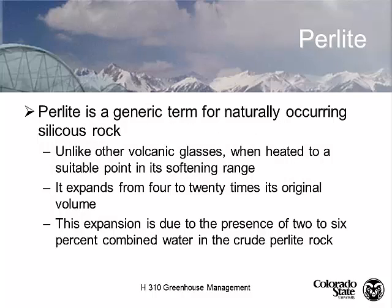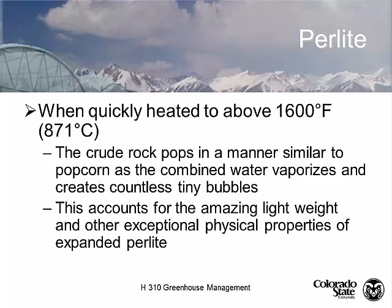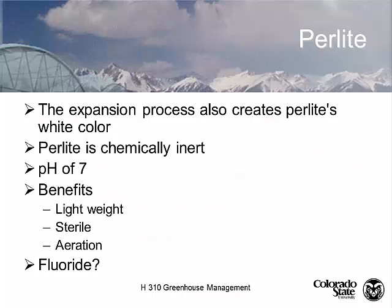Perlite is a siliceous volcanic rock from pumice. When we heat that material, it explodes just like popcorn, and we get a puffy crude rock — heating it to about 871°C, popping with water vaporizing. It's very lightweight and physically and chemically inert, meaning it has a neutral pH and does not provide any cation exchange capacity or nutrients. It's basically sterile — as is vermiculite — until you open the bag. Perlite lightens our potting soil and gives us good aeration.